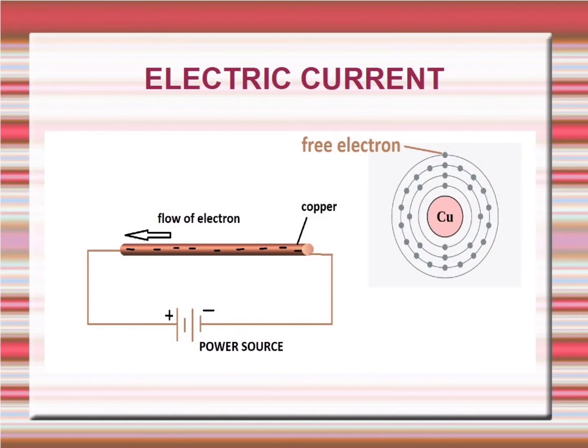Hence all electrons in the copper rod will move in the direction of the positive side of the power source. Electrons will pass through the power source and would again go to the copper rod. So we would get net negative movement of charge in the direction as shown in the figure. That is what is called electric current.